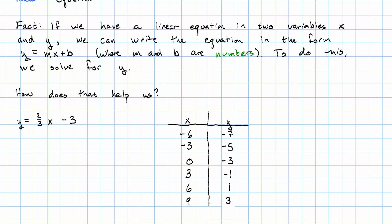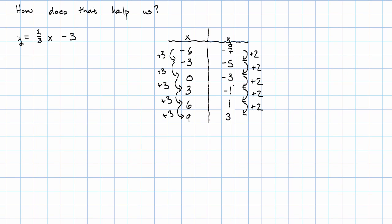Well, check this out. Look what happens between every pair of rows in this table. x goes up by three, y goes up by two. x goes up by three, y goes up by two. That makes a certain amount of sense. I think what we're seeing here is a constant change in x will produce a constant change in y.